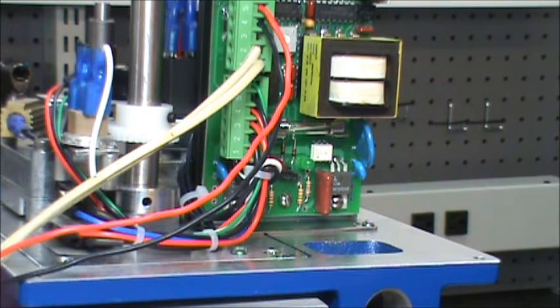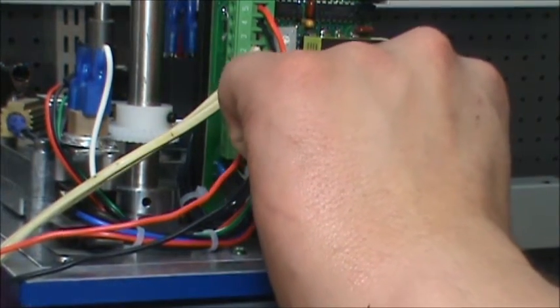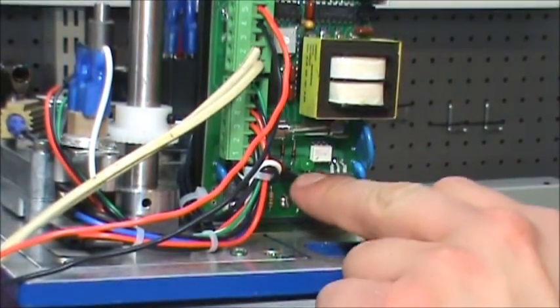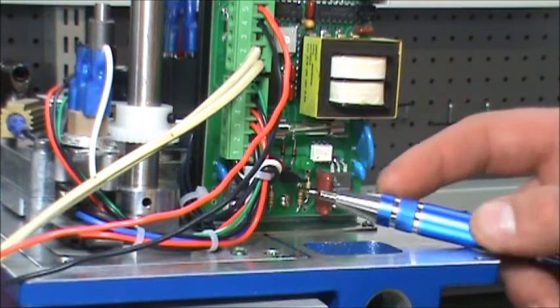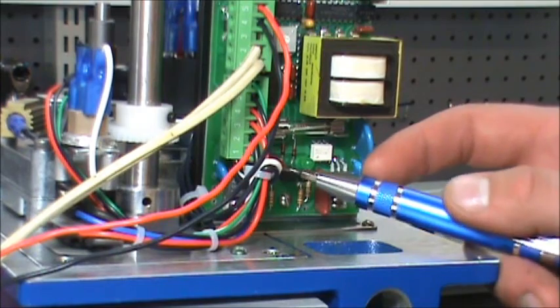If you want it to fail in the open position, you'll take the jumper, turn it sideways. I'll get my hand out of here in just a second. And you'll put it on the middle and left-hand side towards the red.